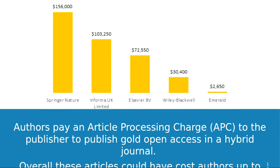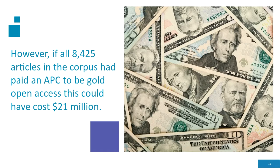Myself and Eamon are editors of the Irish Journal of Technology Enhanced Learning, which would be more accurately described as a platinum or diamond journal — we don't charge readers to read it, nor authors to publish. When we extrapolated the figures for gold open access charges, the articles could cost authors up to a substantial amount. If all 8,425 articles in the corpus had paid an APC for gold access, this would have cost 21 million dollars — that's a staggering figure.